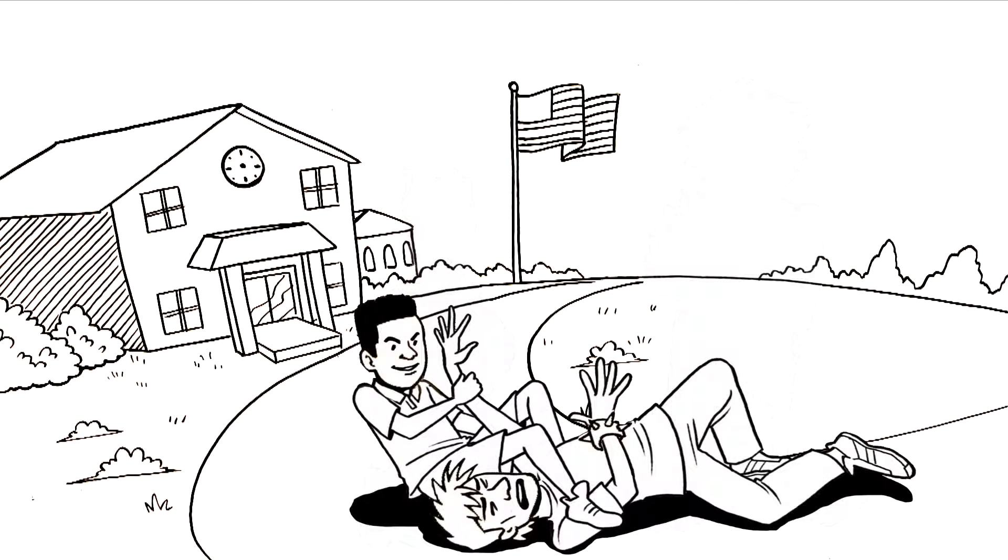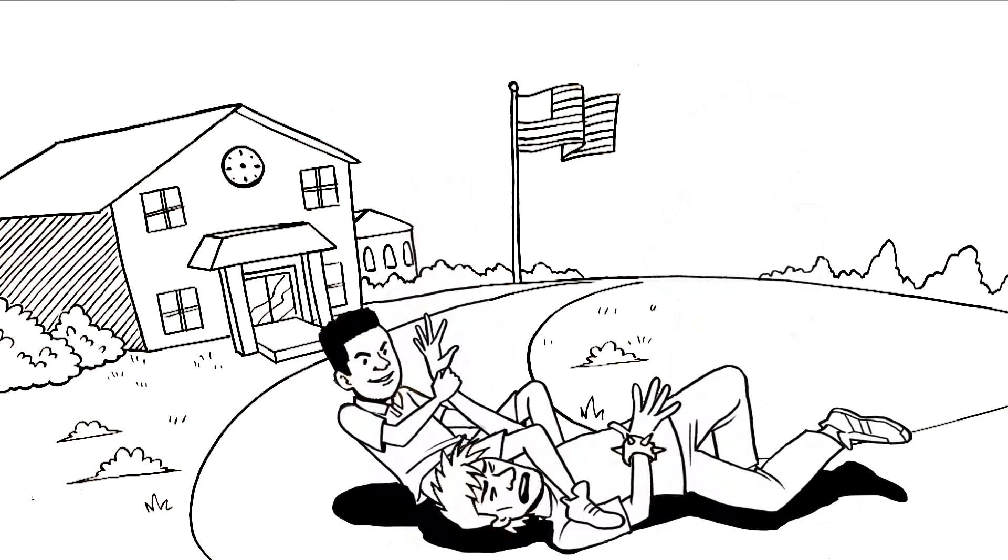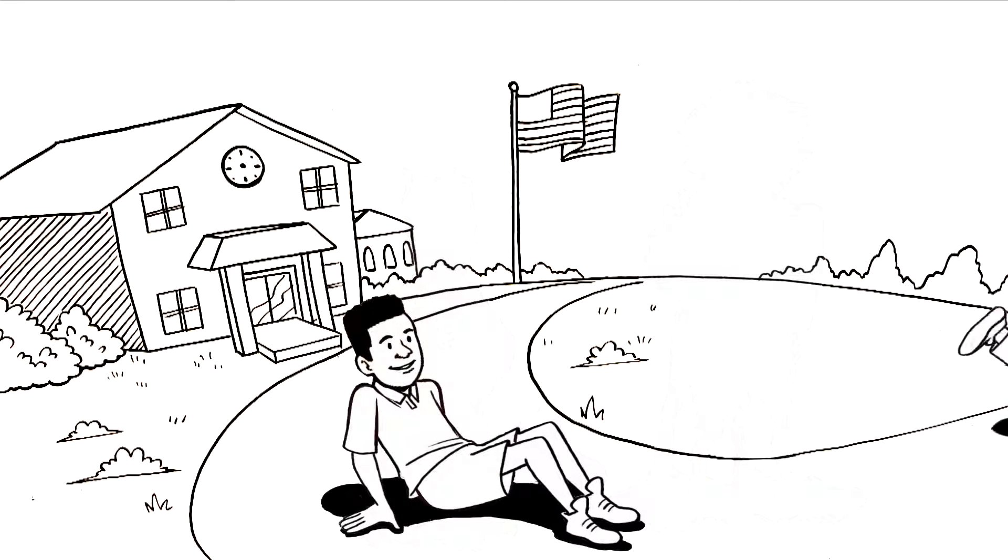Tristan quickly turned the tables. He rolled him, put him in an arm bar, subdued him, and when he let him go, the bully ran away in fear. All without throwing a punch.